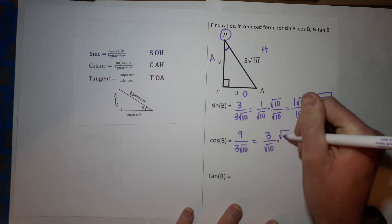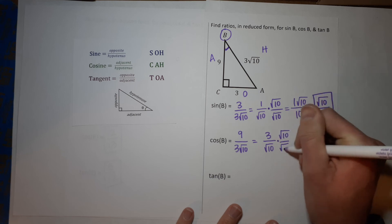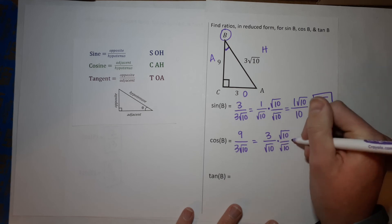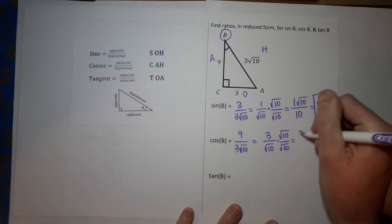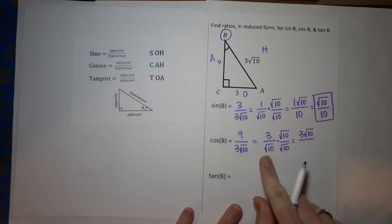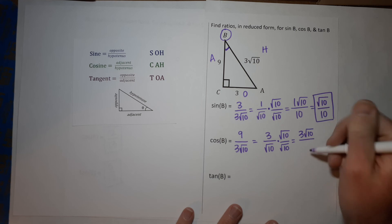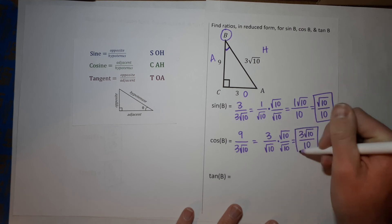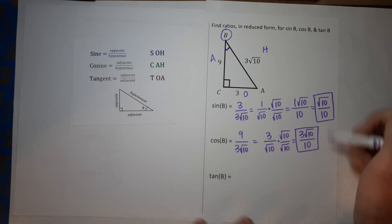And then just like up here, we don't want a radical on the bottom, so I'm going to multiply by the square root of 10 over the square root of 10. Now when I do that, I get 3 square root of 10 over - when I multiply these, they're the same number - the radicals cancel and I'm just left with 10. Now if 3 and 10 could simplify, we would simplify more, but they don't. So that is my cosine.